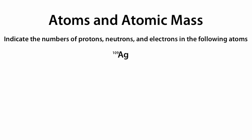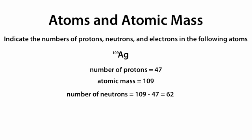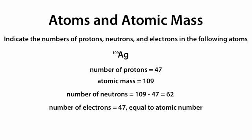With Ag and just 109 on the top, the number of protons is still equal to 47, because we're given Ag, which is silver. If we look up silver on the periodic table, we find it has an atomic number of 47. The atomic mass is again given on the top left, equal to 109. The number of neutrons is 109 minus 47, which equals 62. The number of electrons is still 47, equal to the atomic number, or number of protons.